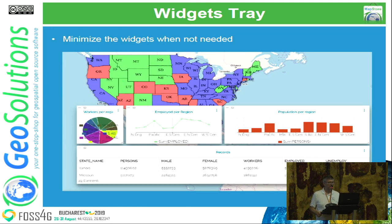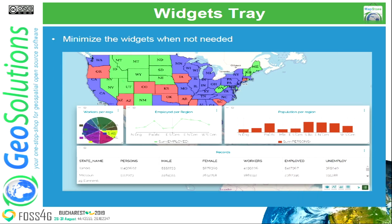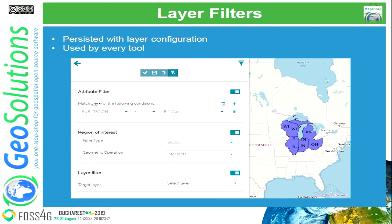We also introduced a widget tray for widgets and dashboards, so you can expand and minimize all the widgets available on a map. We also added the ability to do persisted filters — it was always possible to filter your data on the map using WMS, or in an attribute table view using WFS or CQL filters with a visual composer. Now this functionality can also be persisted, so you can create a sort of SQL view directly on the client, applying a particular filter that is always used by the layer.